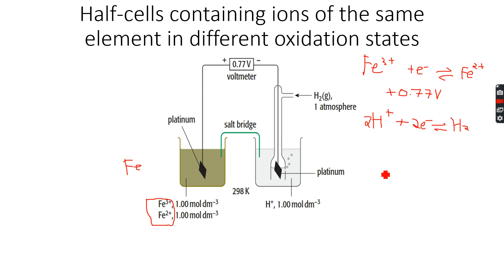So what we do is, this is zero, we know zero. So we'll have to, because +0.77 is greater than zero, we will have to invert this. So this will become H2 gives 2H+ plus 2e- negative.